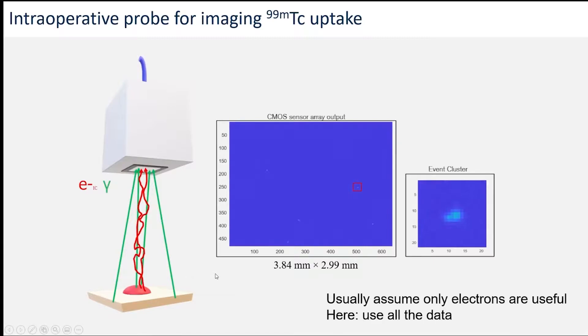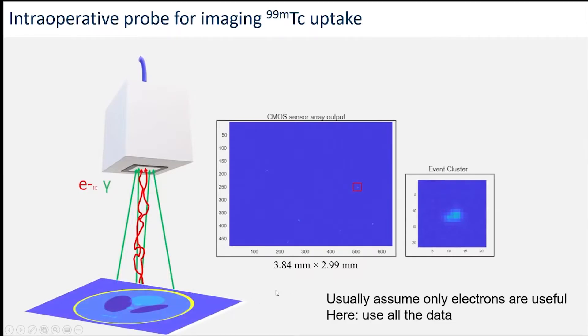What we're trying to do here is use a direct deep-learned reconstruction to use all the data to reconstruct an image of that radiotracer distribution.